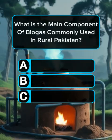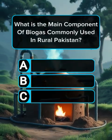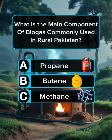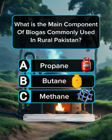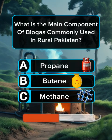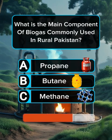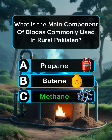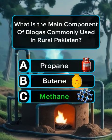Question 5. What is the main component of biogas commonly used in rural Pakistan? Answer C: Methane.